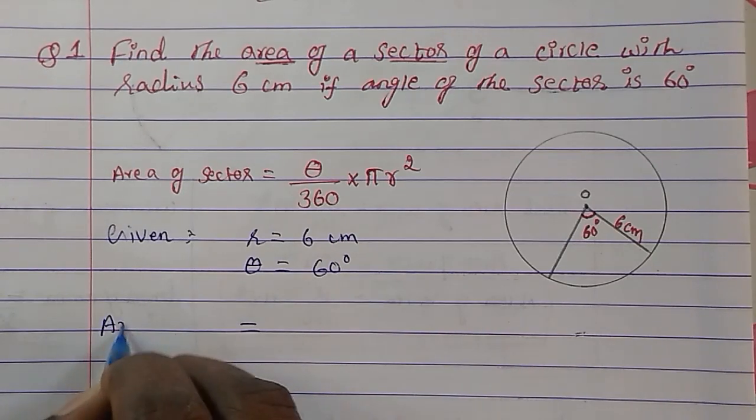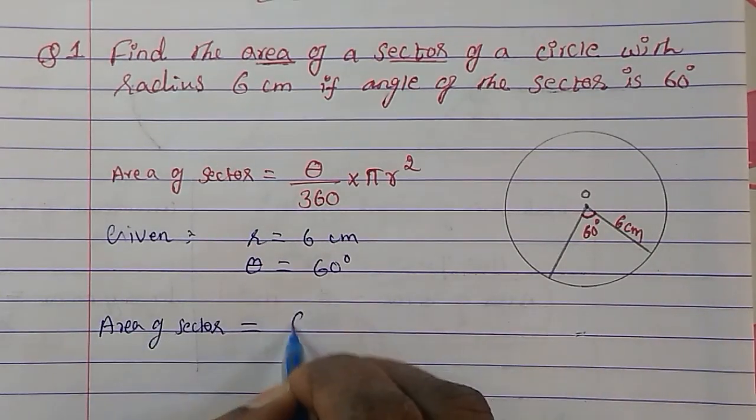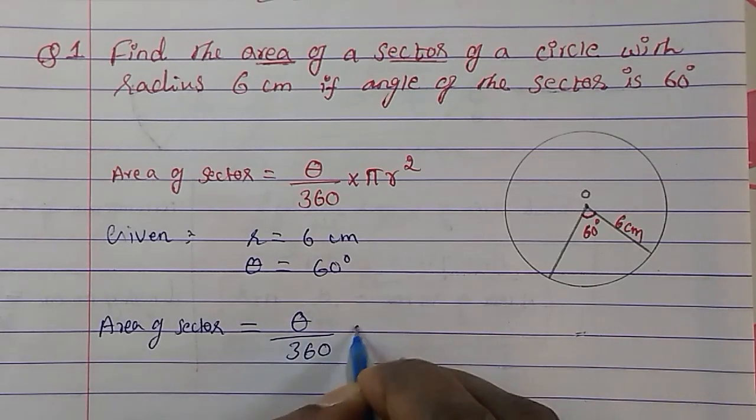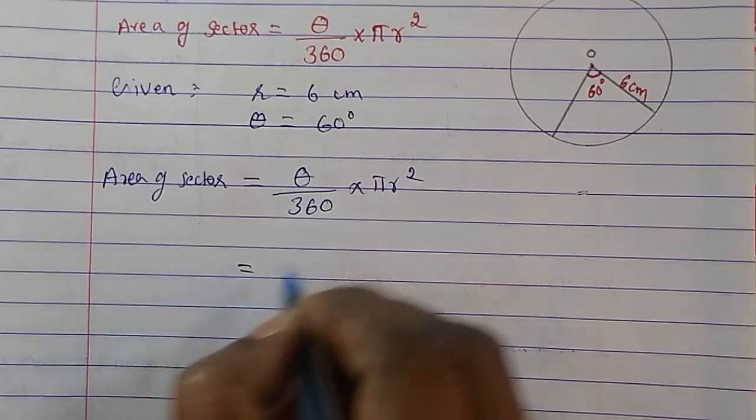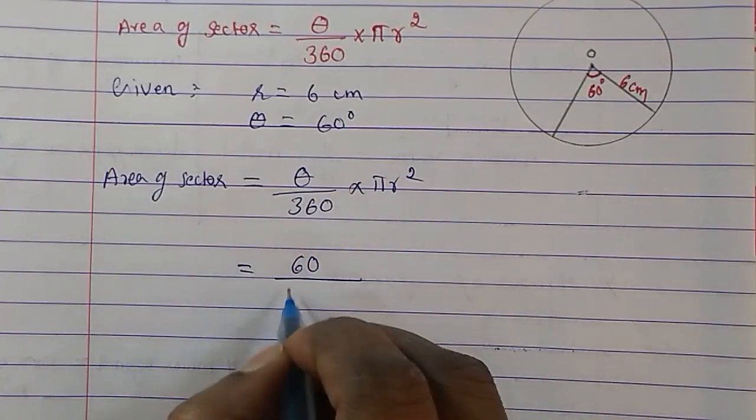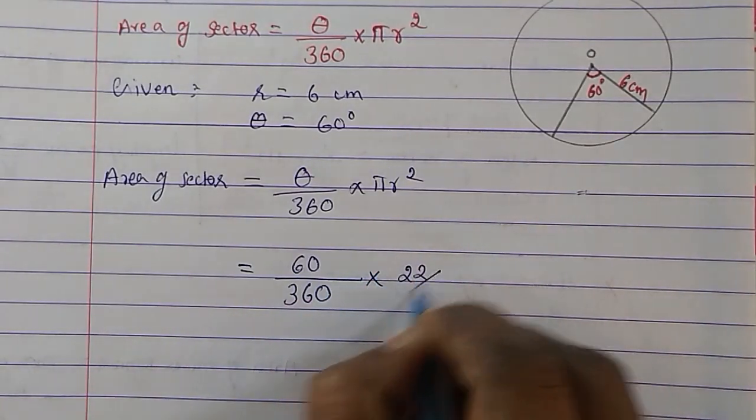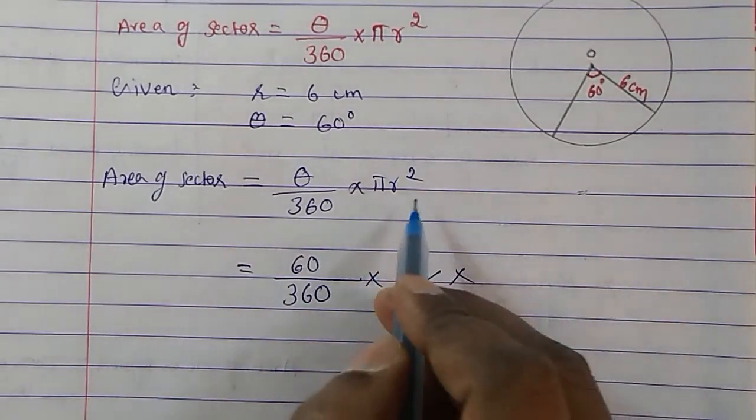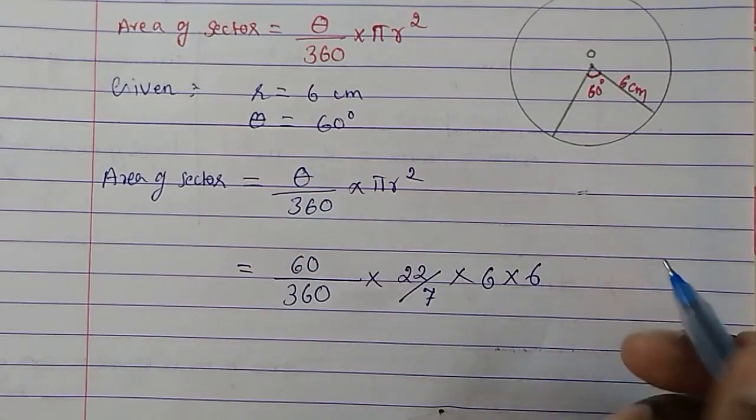Just put the values into the formula. Area of sector equals theta upon 360 into pi r squared. So, theta is 60, then 360, pi value we can put as 22 upon 7, radius is 6 into 6.